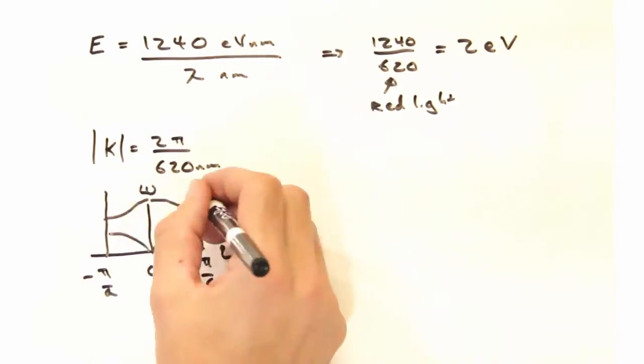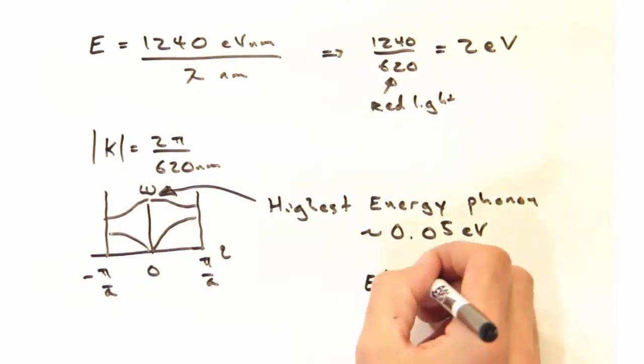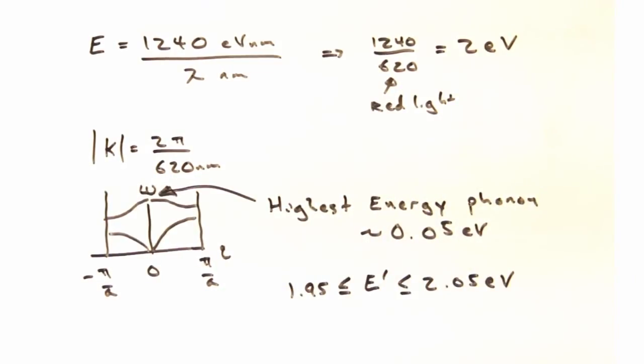If our original incident light has 2 eV, and then the highest energy phonons are about 0.05 eV, that means that E prime,